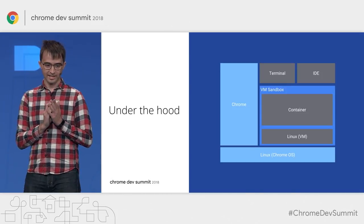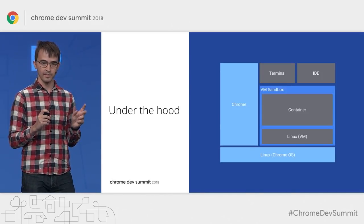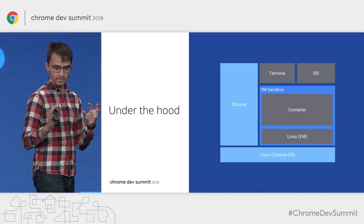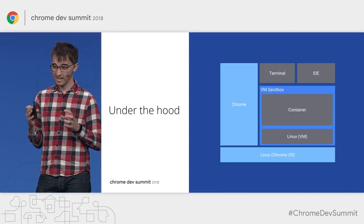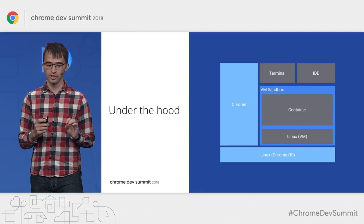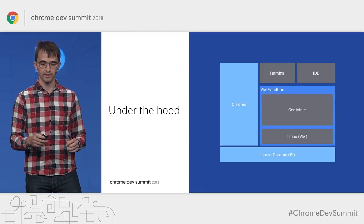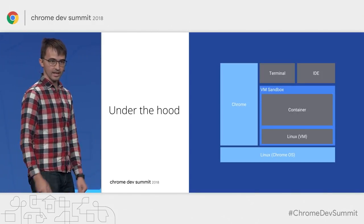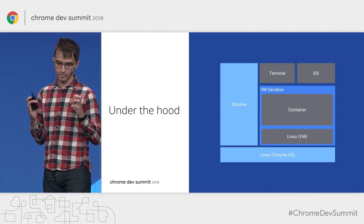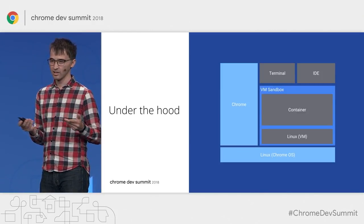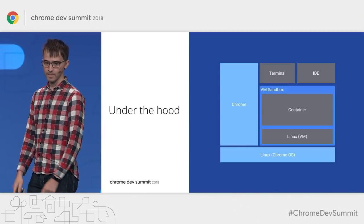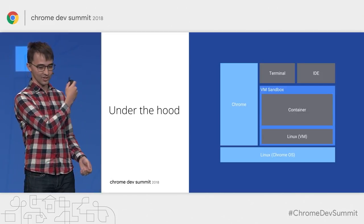Let's take a look under the hood. The first time you launch a Linux app after logging in, we start up a lightweight VM and container. This VM provides the outer security boundary and gives you a real Linux kernel — it's actually a minimal version of Chrome OS designed specifically to run containers. The container inside is where you do all your work. It's tightly integrated with Chrome OS, so launcher icons and graphical apps work just like any other Chrome OS or Android app. And most importantly, you get a terminal.